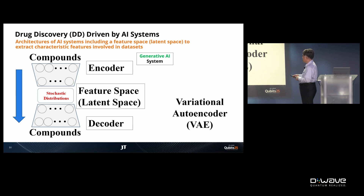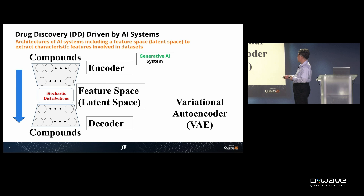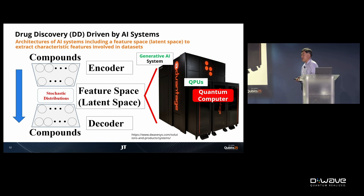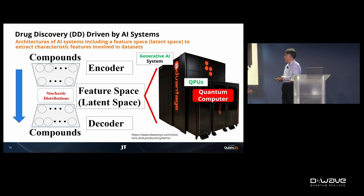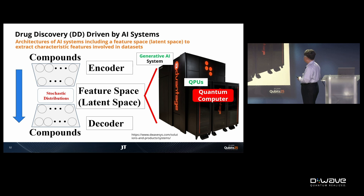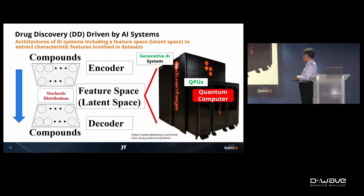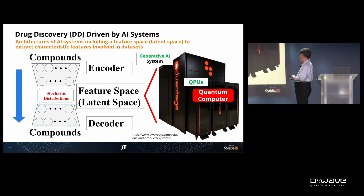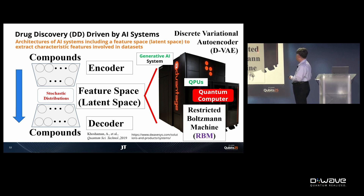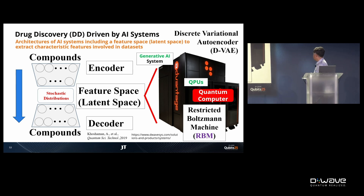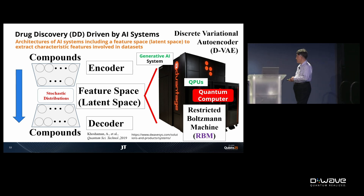We wanted to extend the power and performance of this feature space. The approach is to involve a quantum annealing computer in this feature space. Dr. Amin's team developed a new theory for this purpose — an excellent work — adopting a restricted Boltzmann machine within their theory to incorporate the quantum annealing computer.